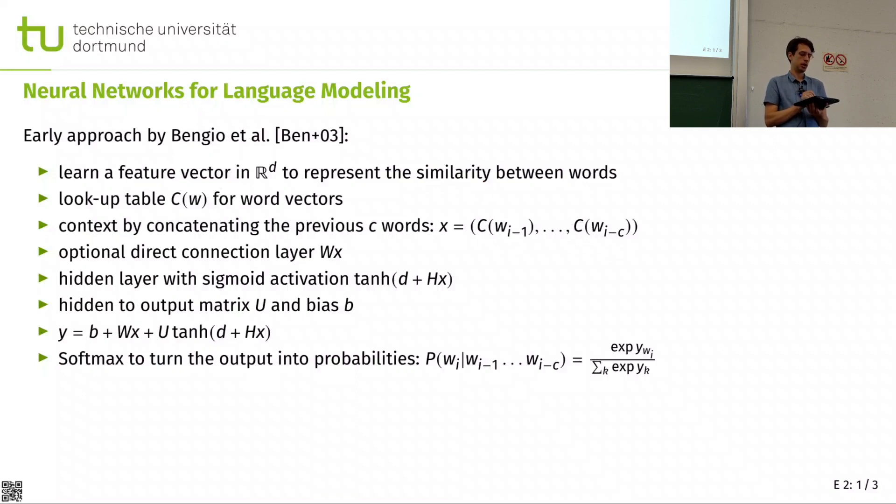And then we need a connection layer that maps these and aggregates these, and a hidden layer in a neural network with a sigmoid activation, tangent hyperbolicus, and then the hidden layer to the output matrix. And we need a bias and all of that, and we will eventually get a typical shallow neural network. So it's input times the neighbors times the W, and the words times X, and combining this.